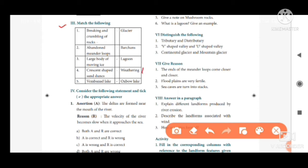Second one, abandoned meander loops. The answer is oxbow lake. Third one, large body of moving ice. The answer is glacier.